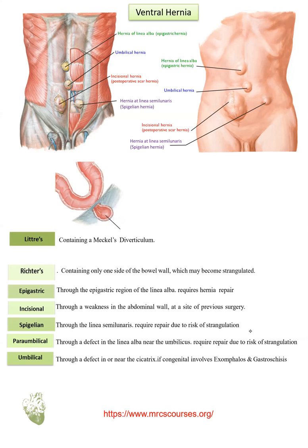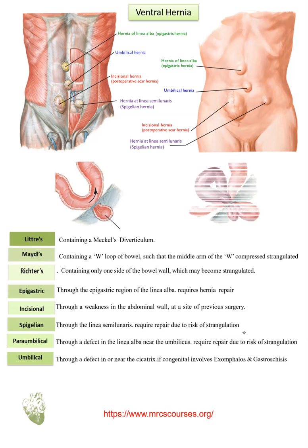Littre's hernia can be demonstrated with patency or continuity of the intestinal lumen. Lastly, Maydl's hernia contains a W-loop of bowel, and the middle arm of the W can be compressed and strangulated, as seen here. This can occur through the internal inguinal ring.